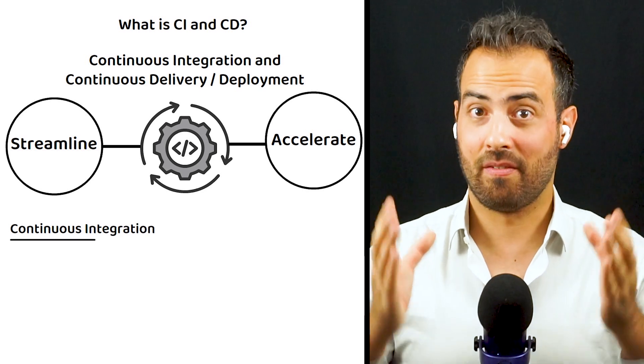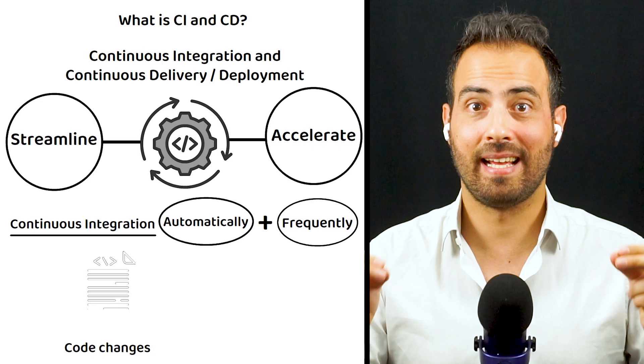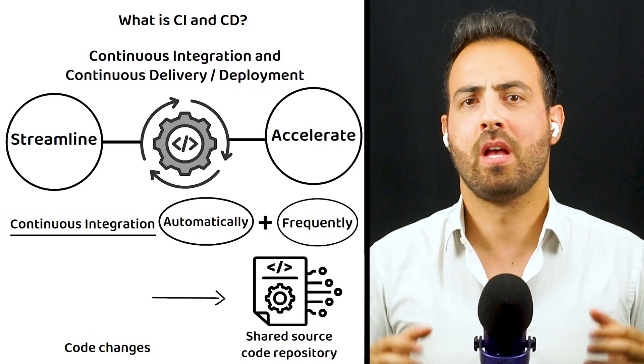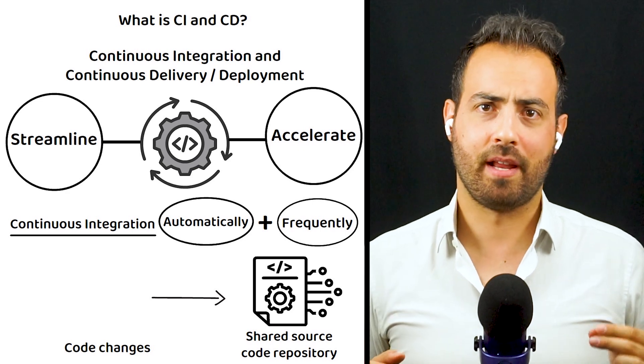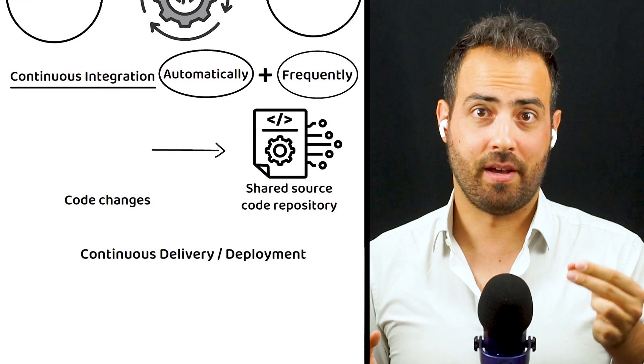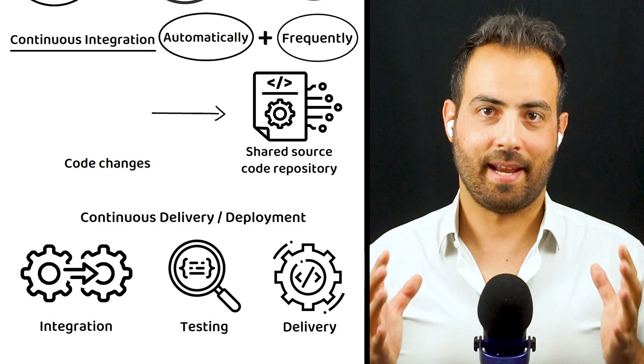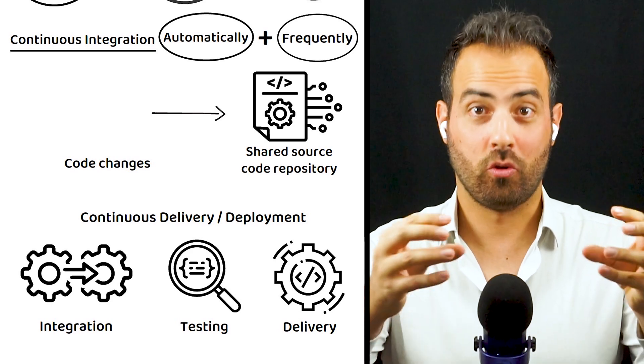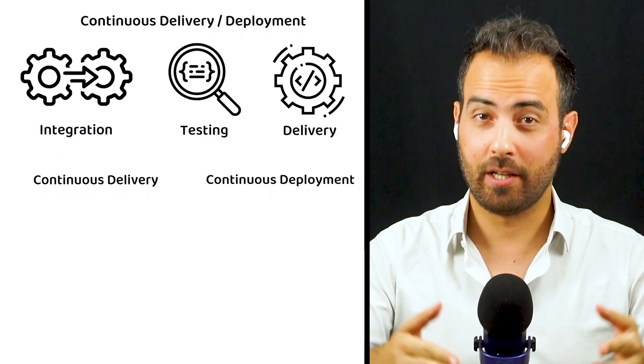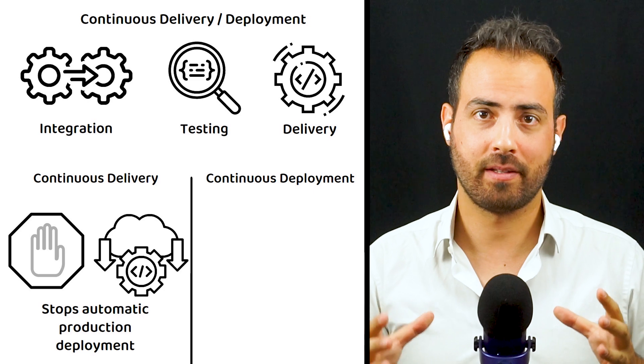In this context, continuous integration refers to the practice of automatically and frequently integrating code changes into a shared source code repository, whereas continuous delivery or continuous deployment is a two-part process that refers to the integration, testing, and delivery of code changes. For clarity, the difference between continuous delivery and continuous deployment is that continuous delivery stops short of automatic production deployment, whereas continuous deployment will automatically release the updates onto the network.